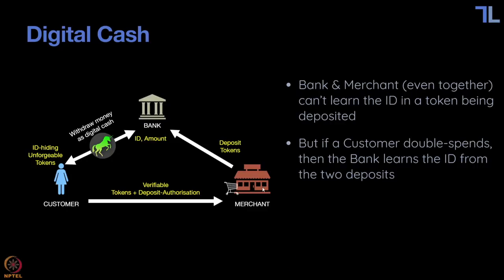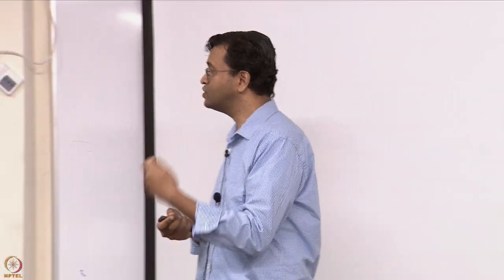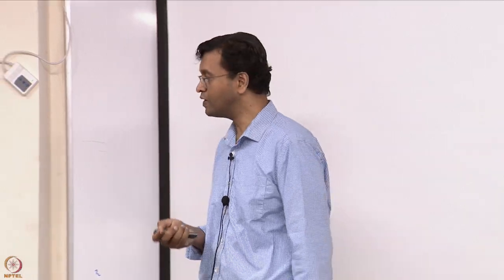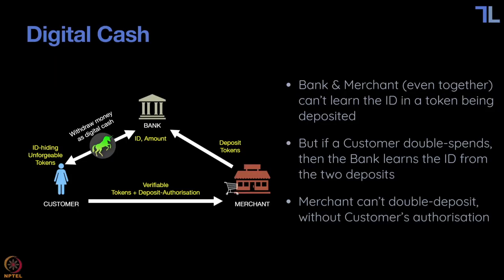This protocol, where the deposit authorization is given, is actually a protocol where there's a challenge. If you have answered two challenges — with the same merchant or two merchants — on the same token, then the deposit authorizations, if you put both of them together, you can recover the ID of the person. That's what prevents double spending. If you do that, they'll put a big penalty on you, so it's not in your interest to double spend.